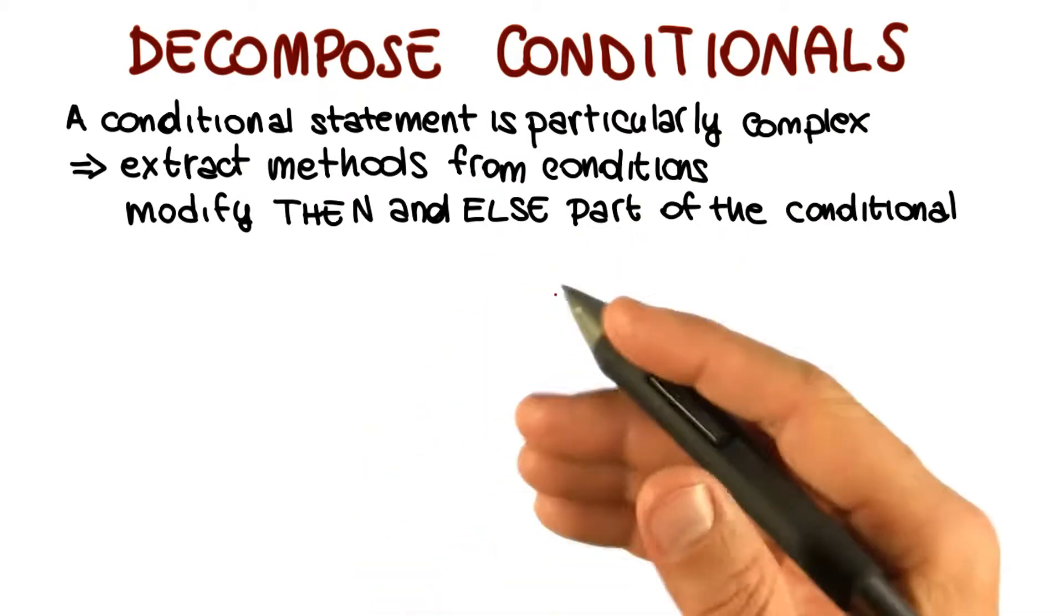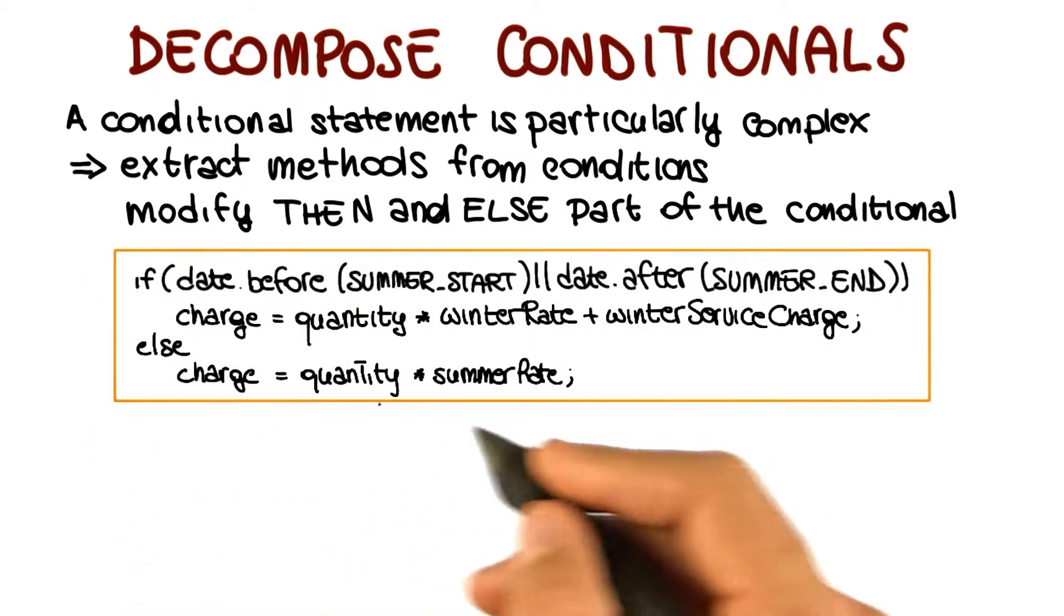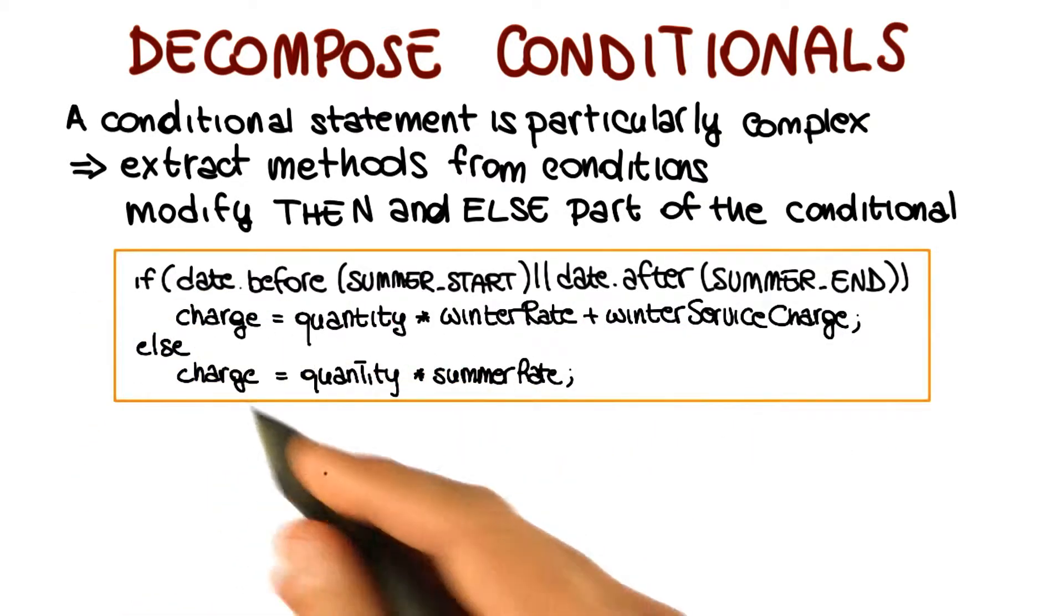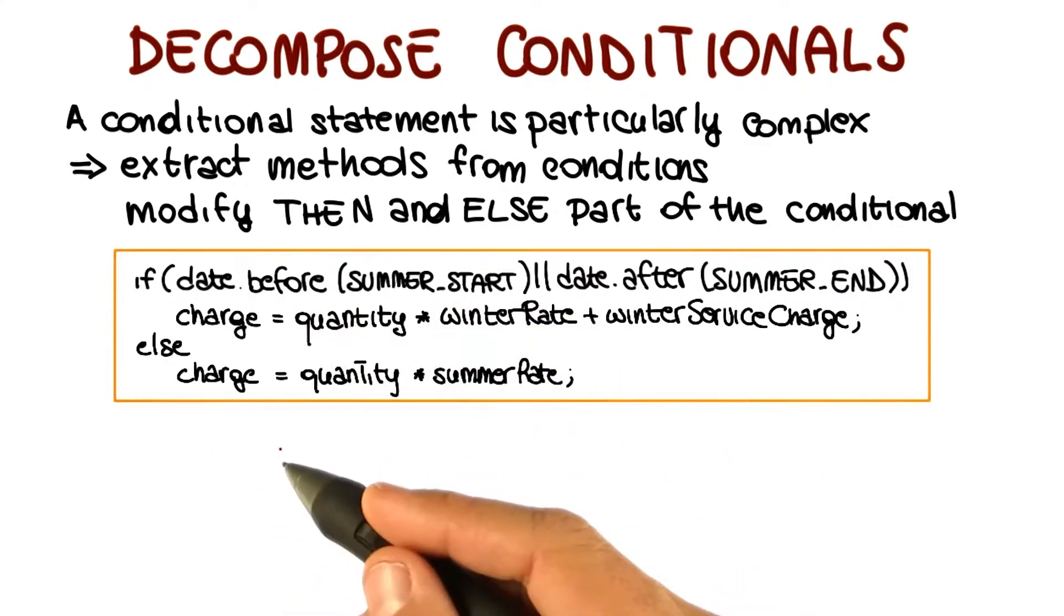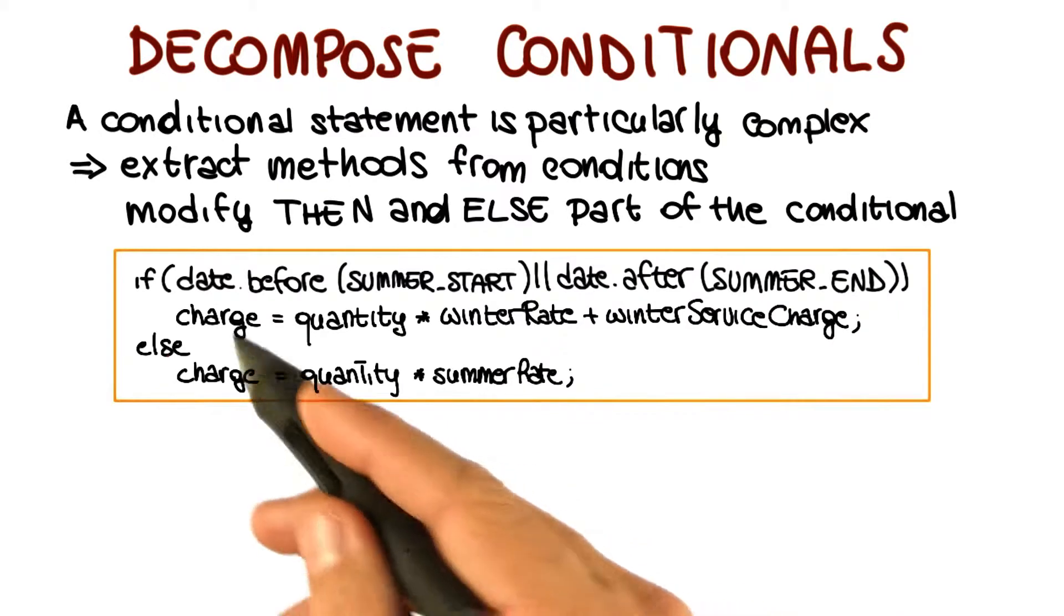So let's see how that works with an example. Here we have a method that computes some charge, and it computes the charge based on some characteristics of the date that is provided as input, or it's just one of the fields in the class.